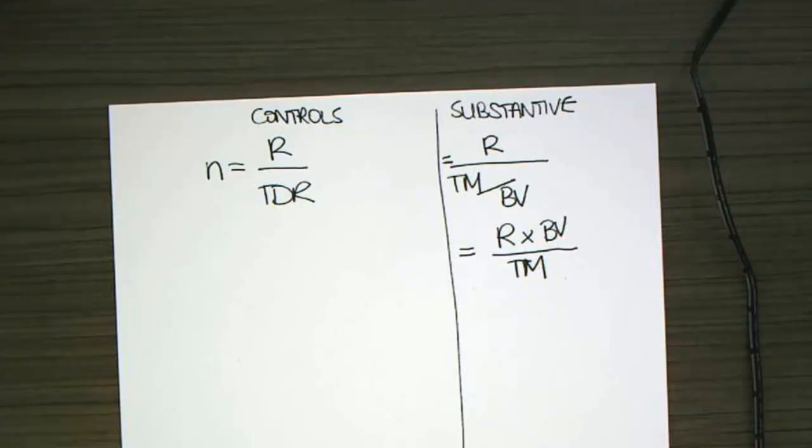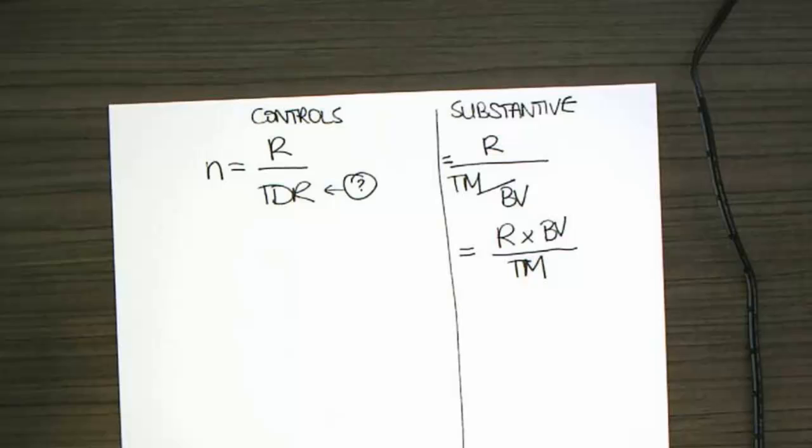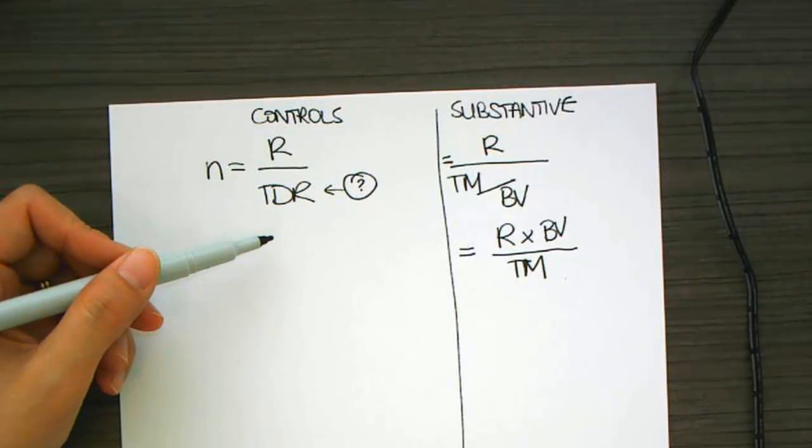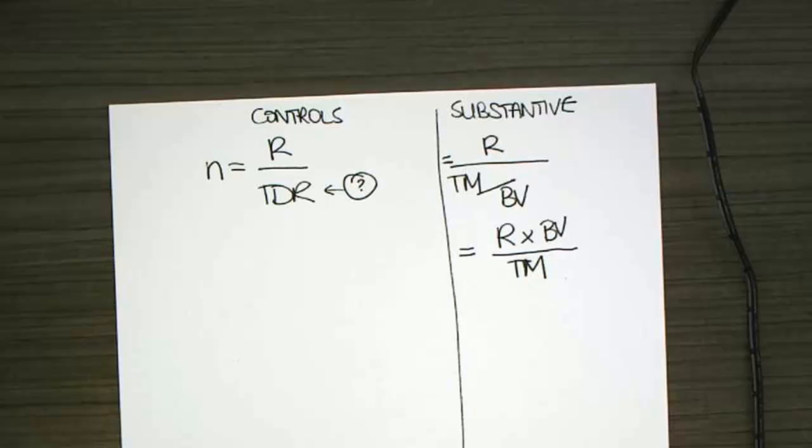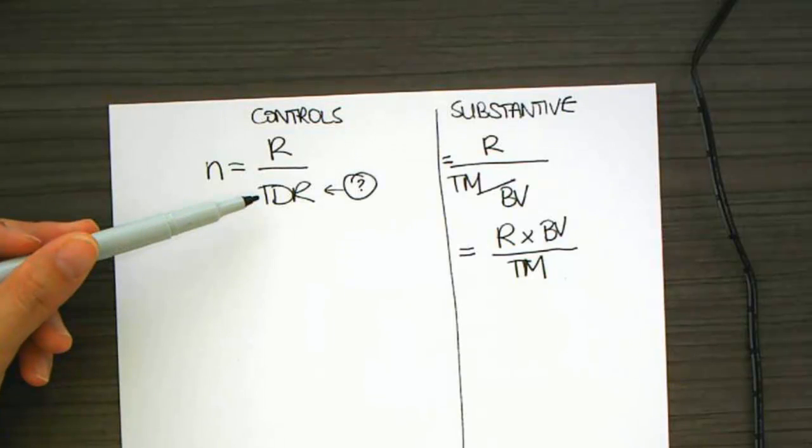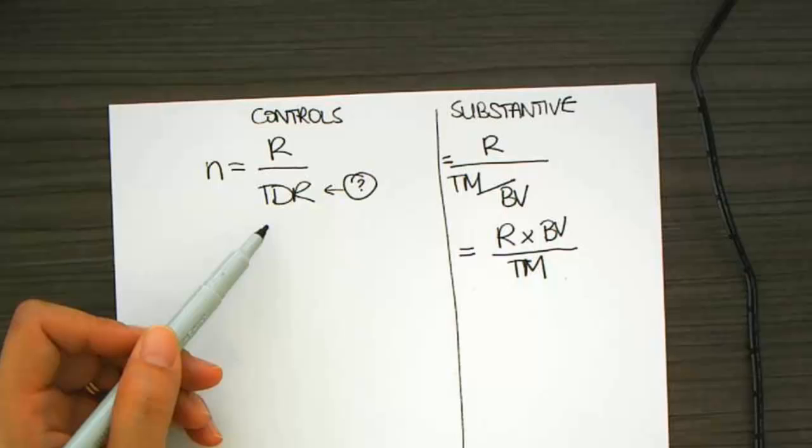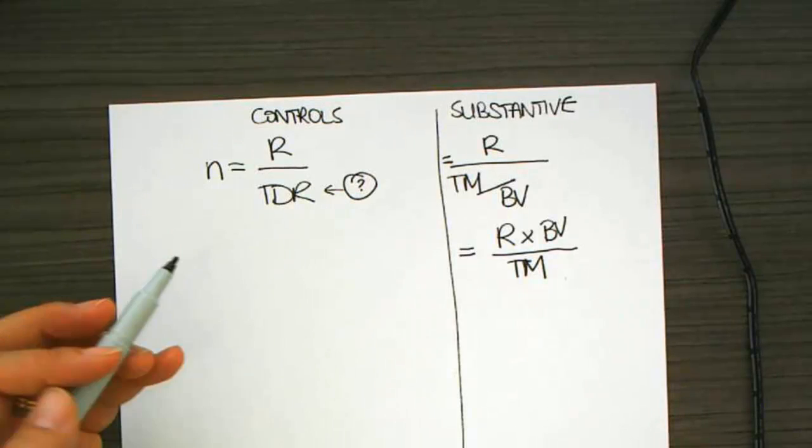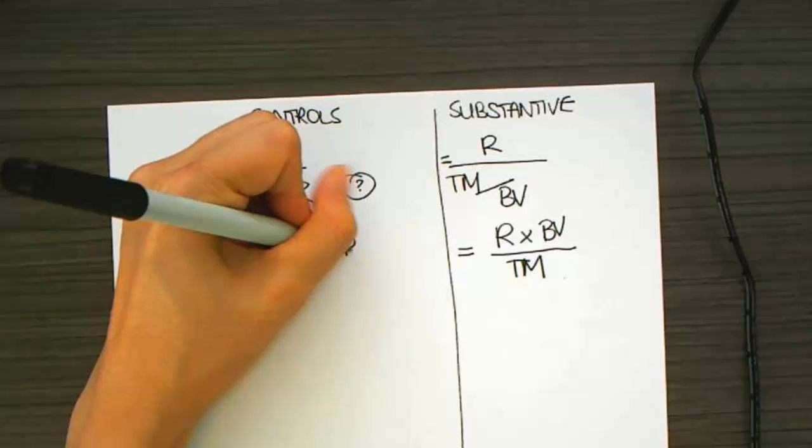What happens if you don't have the tolerable deviation rate as a percentage, and instead you have a number of errors. So, if you don't have TDR as a percentage, and instead you have a number of deviations, then we use one of the tables, either table 11.3 or 11.4 out of Gain and Simnet, 2011, this is the fourth edition, revised, to be able to determine your sample sizes.